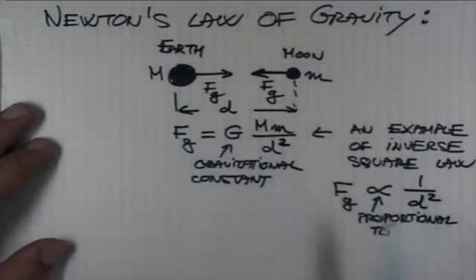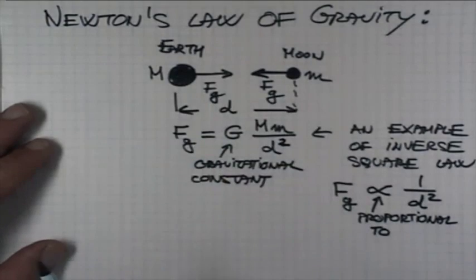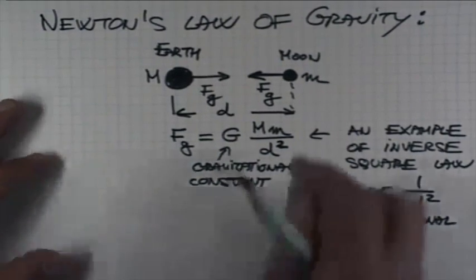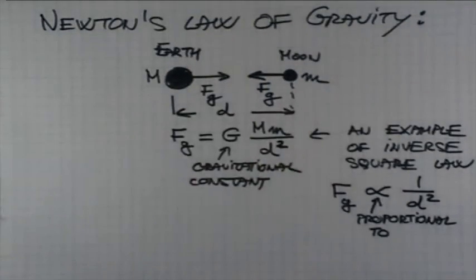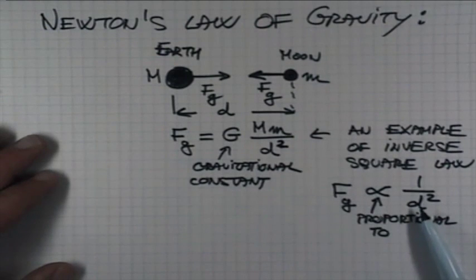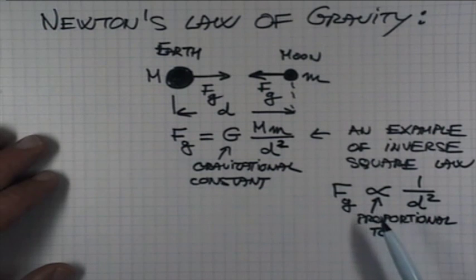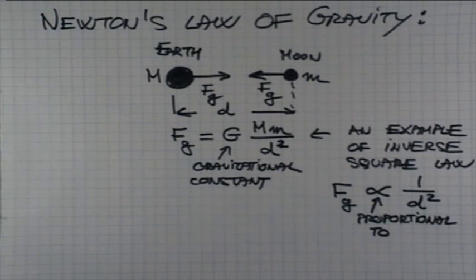That means that if I double the distance between two same bodies, if somehow I'm able to pull them apart at a distance that is twice this distance, then because the force of gravity varies with distance as 1 over distance squared, when I double the distance, I have to square it. That means that the force of gravity is going to decrease by a factor of 4.